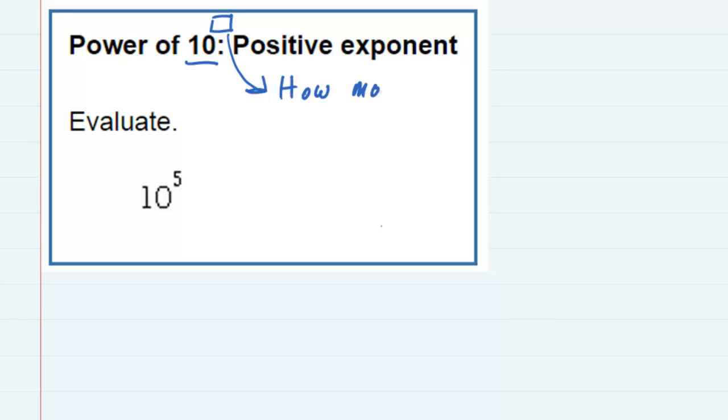So how many zeros behind the one once we've evaluated it. So for this one, 10 to the 5th means I'm going to have a 1 and I am going to have 5 zeros behind that 1. If I put in my commas to separate place values, 10 to the 5th would be 100,000.